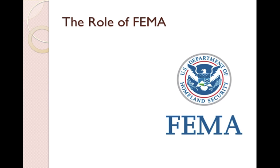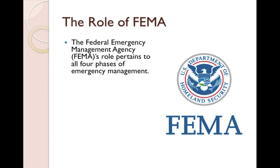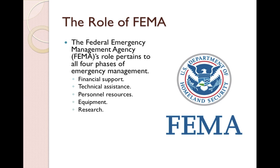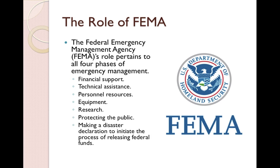The role of FEMA in this process cannot be overlooked. The Federal Emergency Management Agency's role pertains to all four phases of emergency management: financial support, technical assistance, personnel resources, and equipment, as well as research and protecting the public. Making a disaster declaration at the federal level is done by FEMA to initiate the process of releasing federal funds, and this is only done in the most extreme circumstances.